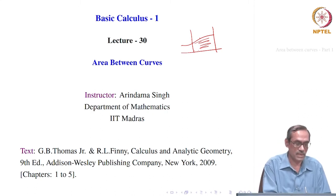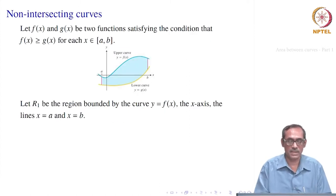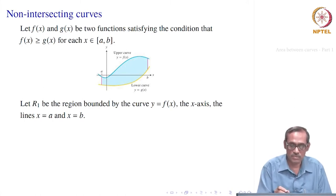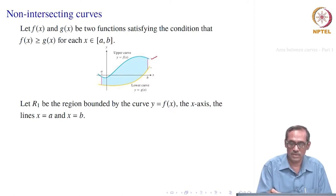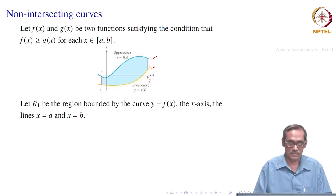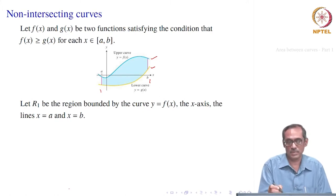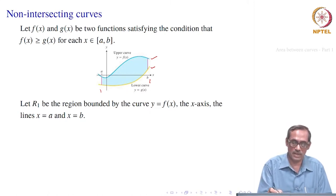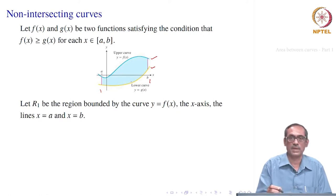Let us first take the case of non-intersecting curves. Suppose we have two functions, y = f(x) in blue and y = g(x) in yellow, and we want to compute the area between these two curves, bounded on the left by x = a and on the right by x = b. This is the area painted blue. We assume that for any x in the interval [a, b], f(x) ≥ g(x) — f(x) is on top.